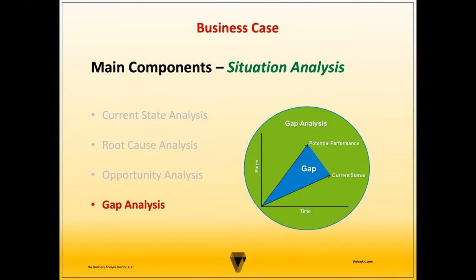This section explains how the recommended solution directly addresses the identified business need outlined in the business case. The optimal course of action clearly outlines the recommended solution and the key functions and capabilities that comprise it. A key element is to discuss how this course of action aligns with the organization's strategic goals and objectives, and how it will directly solve the business problem or realize an opportunity.